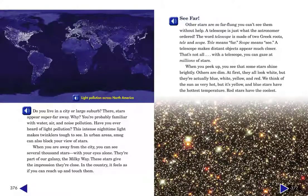See far. Other stars are so far flung you can't see them without help. A telescope is just what the astronomer ordered. The word telescope is made of two Greek roots, tele and scope. Tele means far. Scope means see. A telescope makes distant objects appear much closer. That's not all. With a telescope, you can gaze at millions of stars.